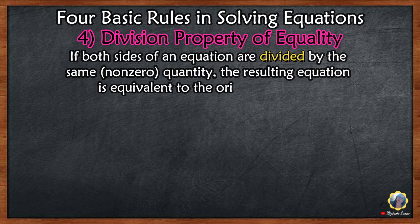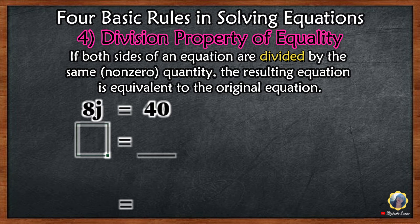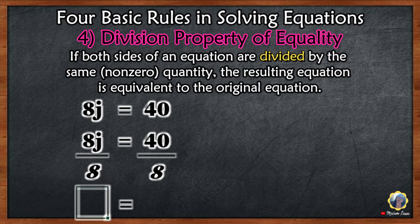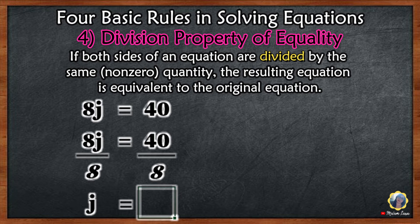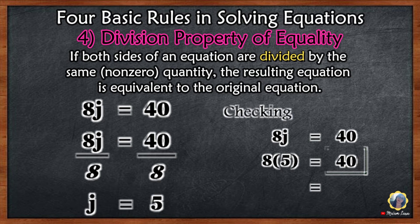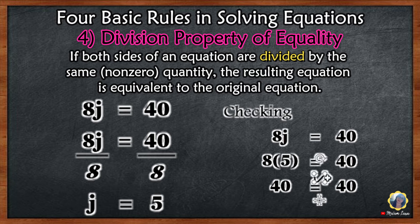If both sides of an equation are divided by the same non-zero quantity, the resulting equation is equivalent to the original equation. Example: 8J equals 40. Divide both sides by 8. 8 divided by 8 is 1, so bring down J; 40 divided by 8 is 5. The value for J is 5. To check, substitute 5 for J in the original equation: 8 times 5 is 40; 40 equals 40. Therefore, the solution is 5.